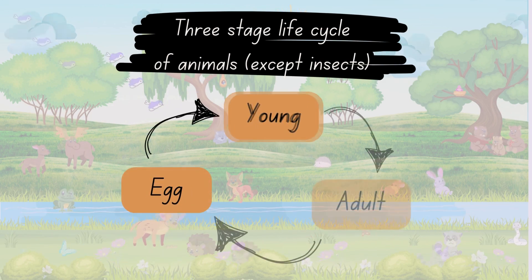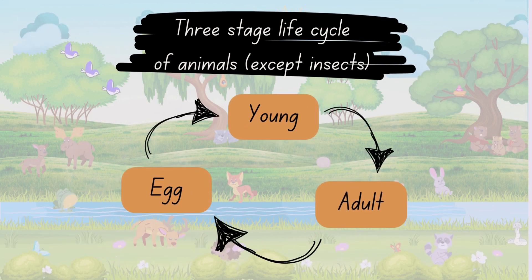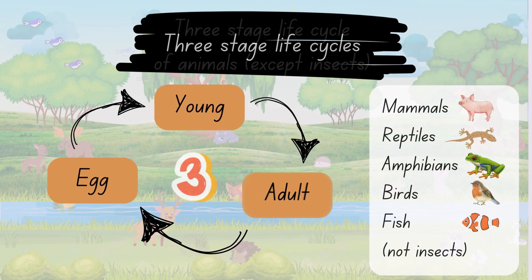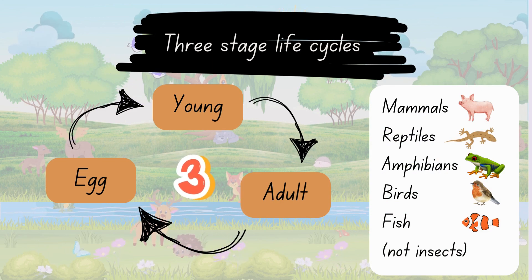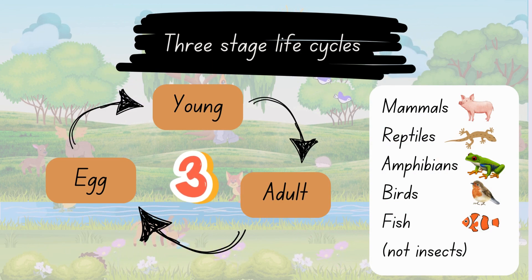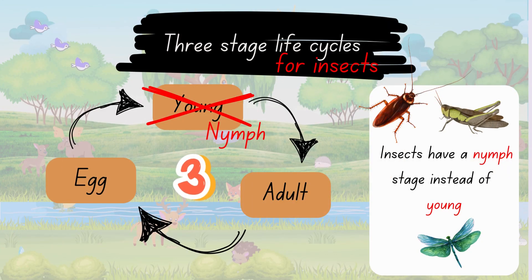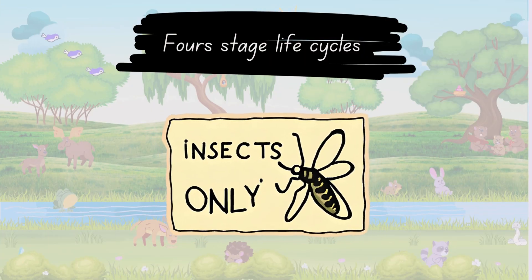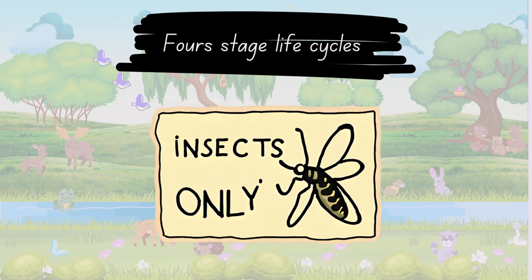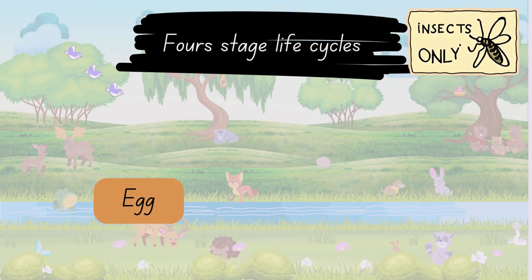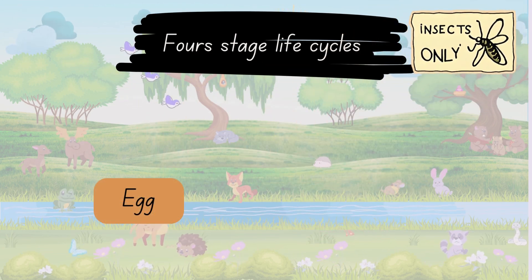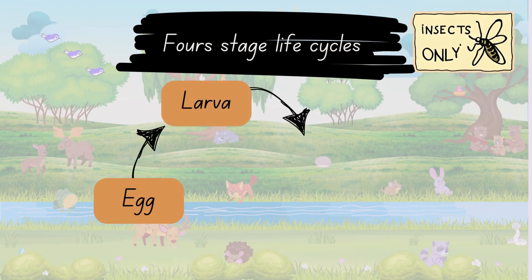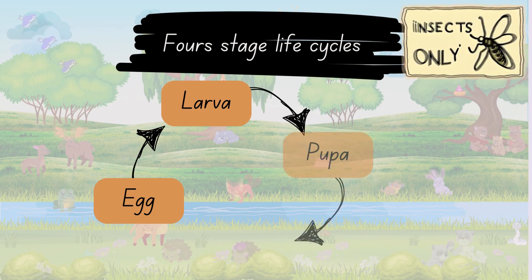Three-stage cycles go from egg to young to adult — this is for mammals, reptiles, amphibians, birds, and fish. Insects are a little different: some have three stages, some have four. Four-stage life cycles are for insects that go through metamorphosis.